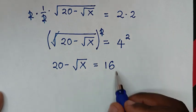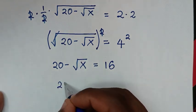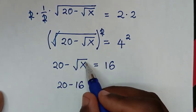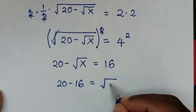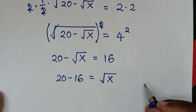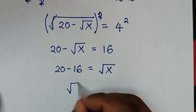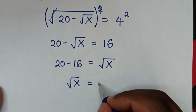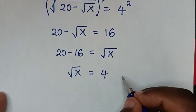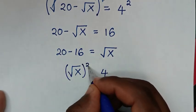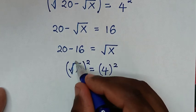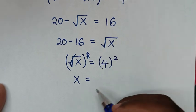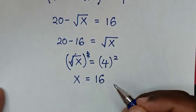We rearrange: taking 16 to the left gives 20 minus 16, and taking the negative √x to the other side gives positive √x. So √x equals 4. Squaring both sides to remove the square root, x equals 4 squared, which is 16.